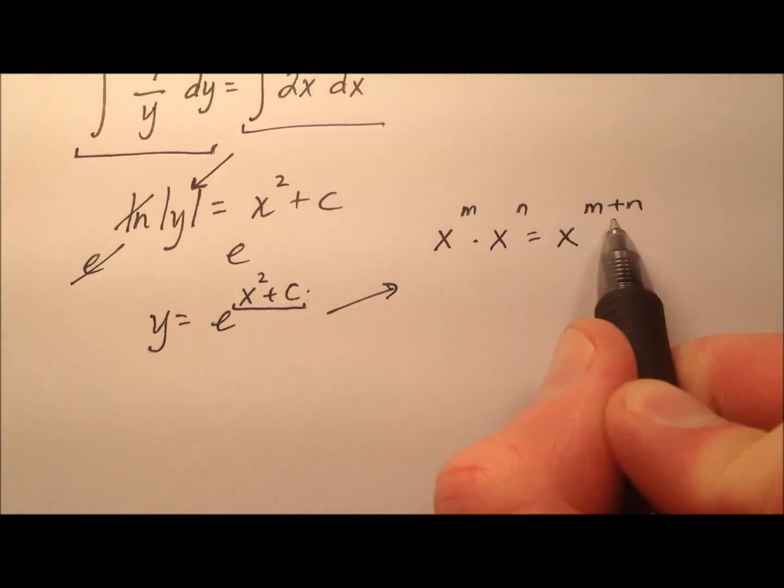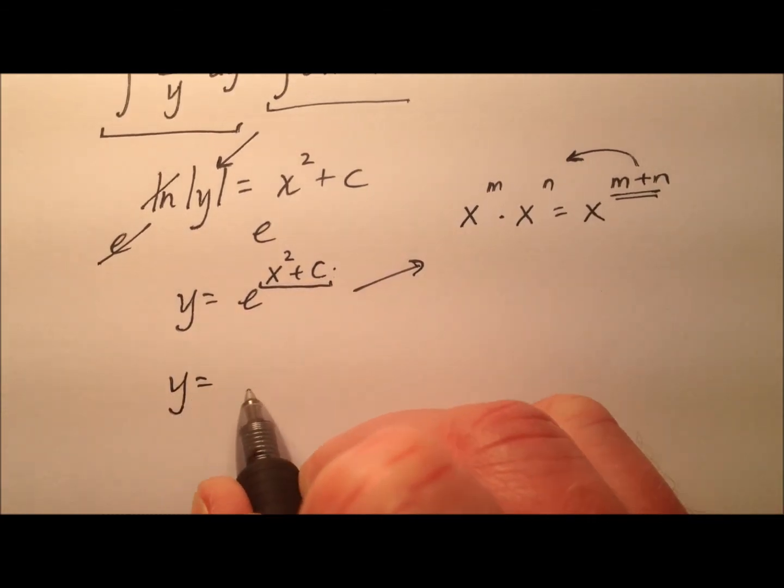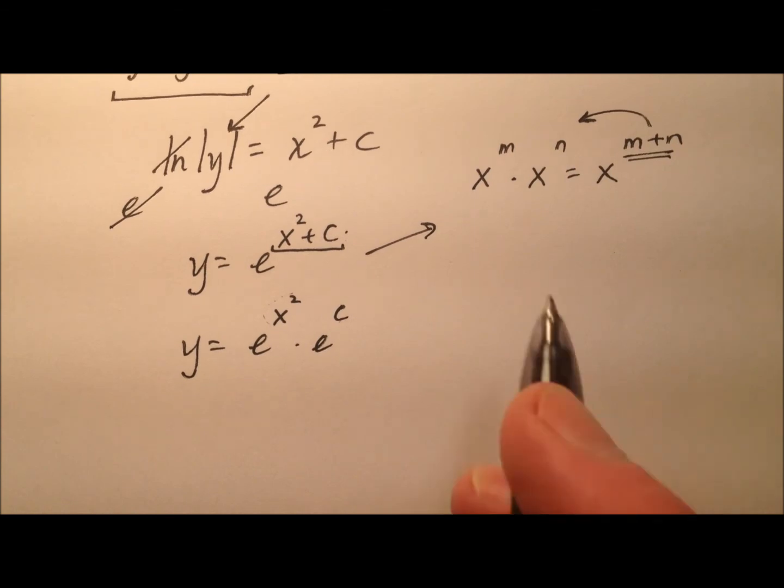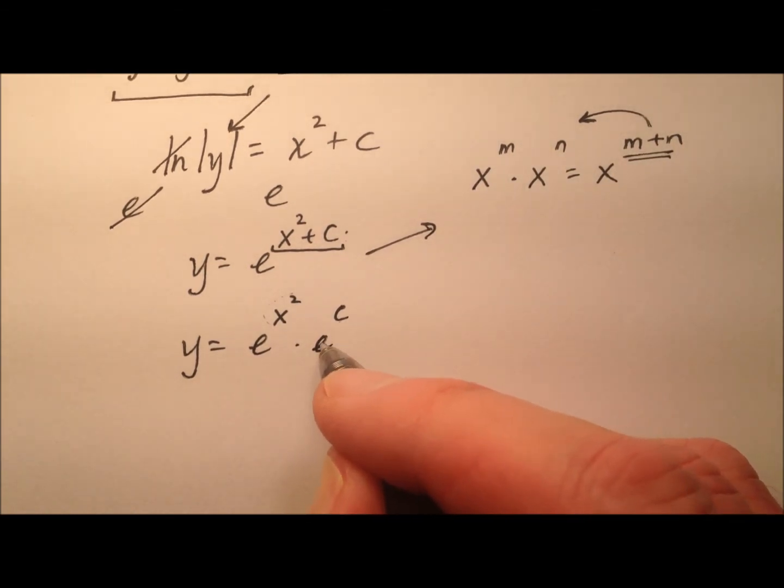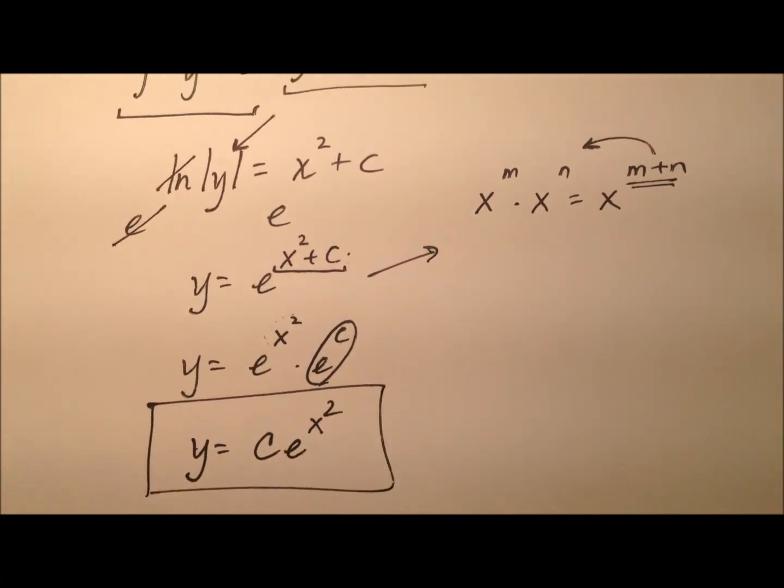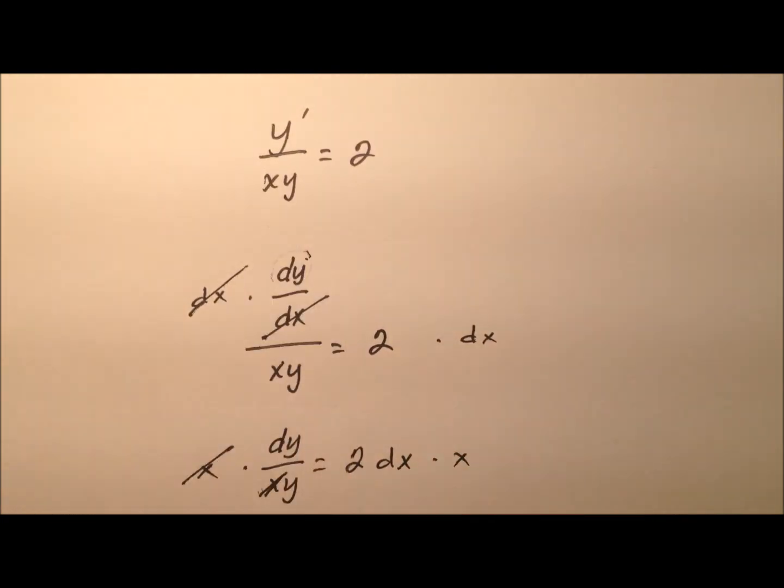So if I have y equals e to the x², I can say it's being multiplied by e to the c. And that's where this addition came into play. And what we did previously, e to the c, well, this is just a constant. It's being raised to the power of a constant. So I can write this then as just c times e to the x². And this will be the general solution then for my original separable differential equation.